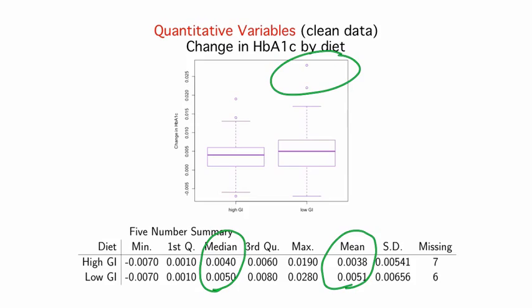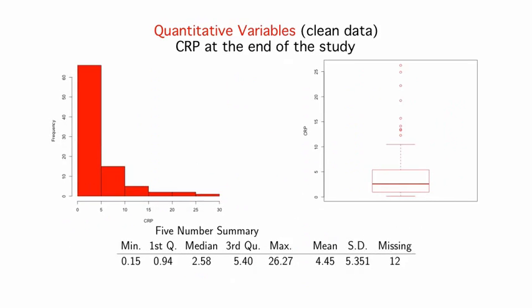Looking now at our outcome of secondary interest, CRP, we can see that it's very right skewed. In the box plot, the long right tail in this distribution shows up as a trail of observations beyond the upper fence. Right skewed distributions often happen in cases like this, for variables such as CRP, which are bounded below by zero, but have the potential to be very high.